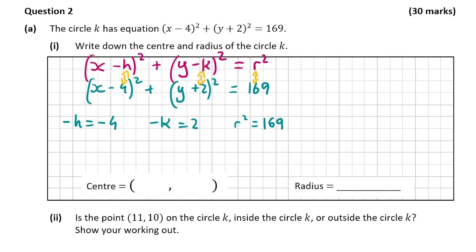If -h = -4, we can cancel the minuses on both sides, giving us h = 4. Now we have -k = 2. We don't want -k, we just want k, so I'm going to multiply both sides by -1. So -k × -1 = +k and 2 × -1 = -2. So h = 4 and k = -2.